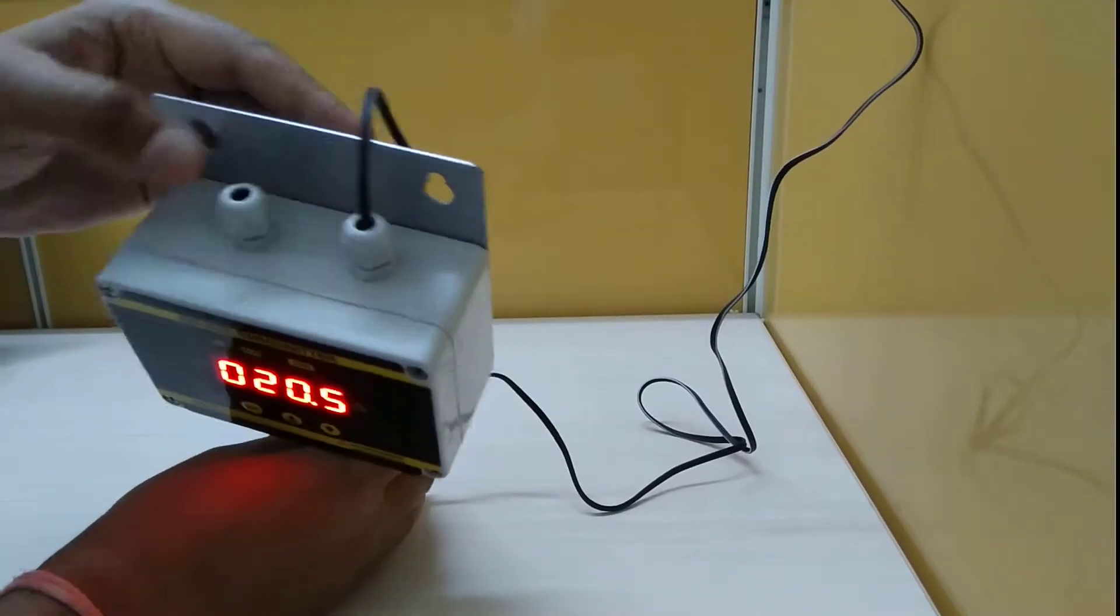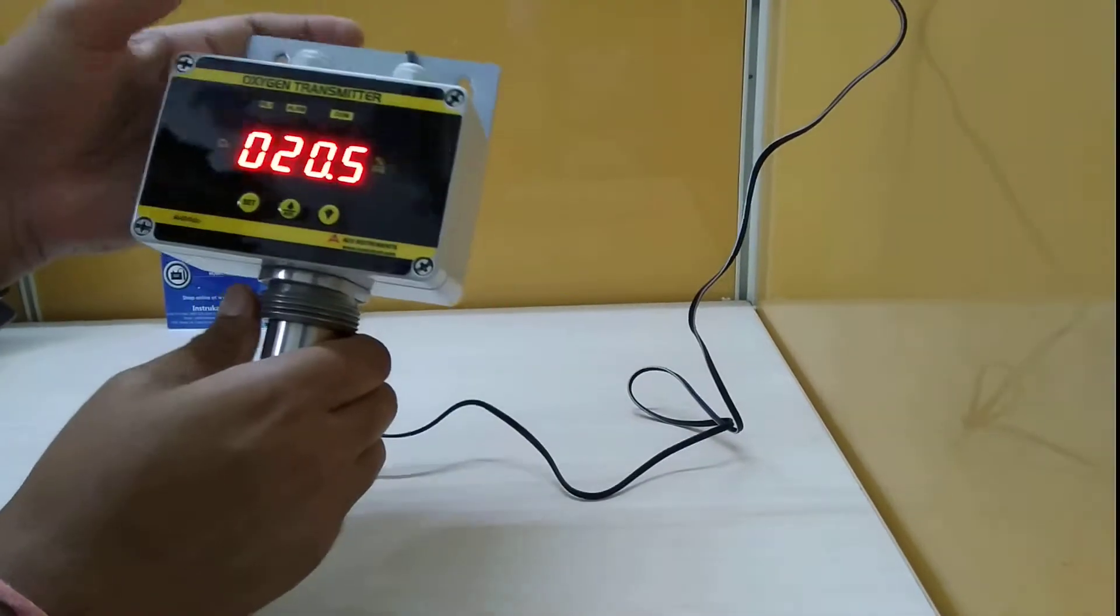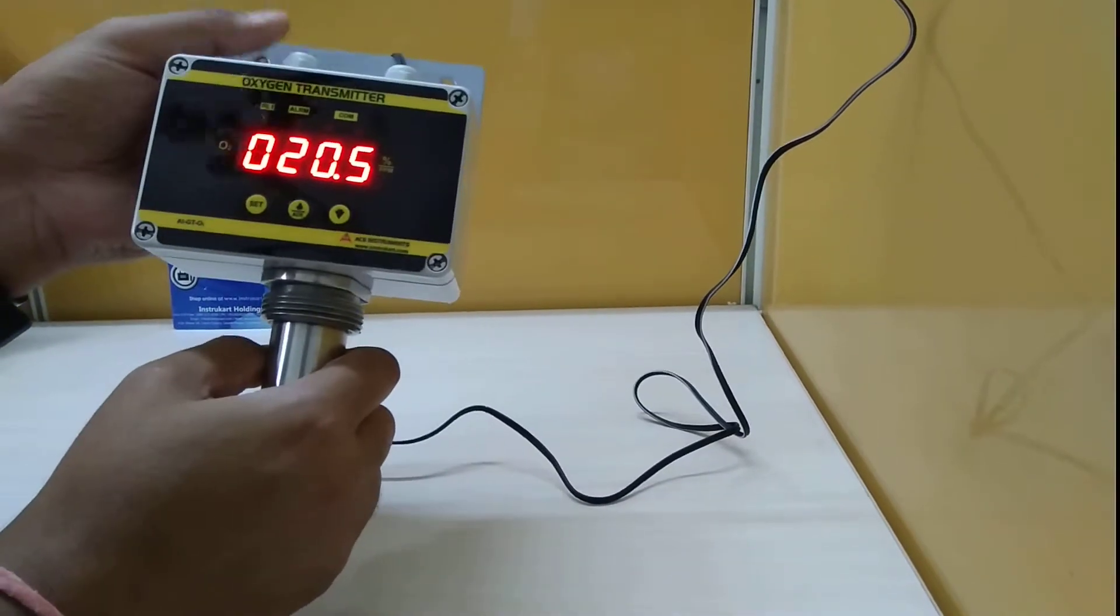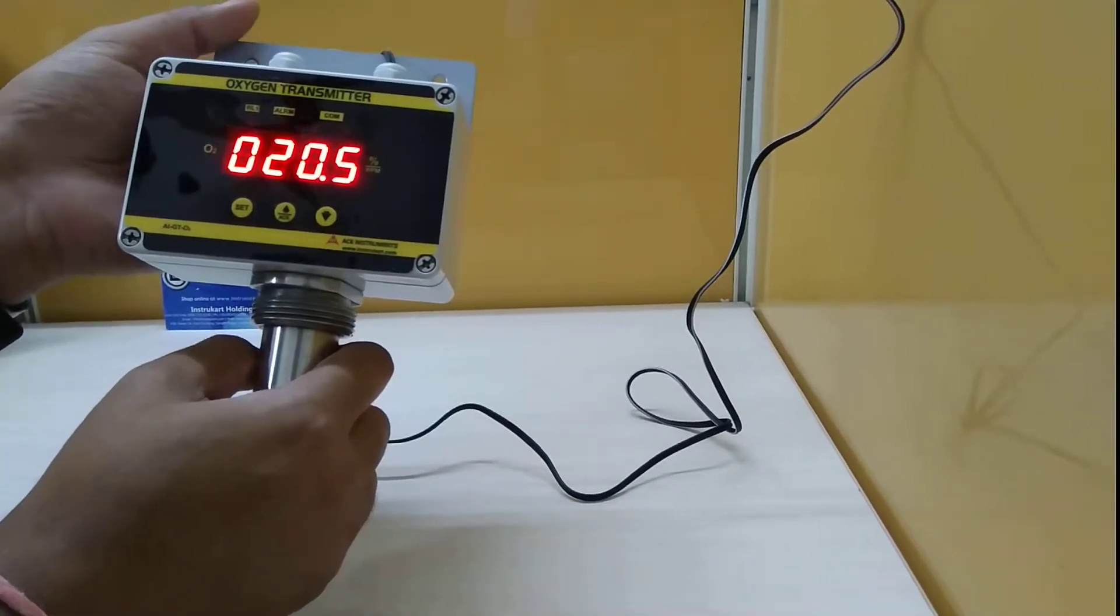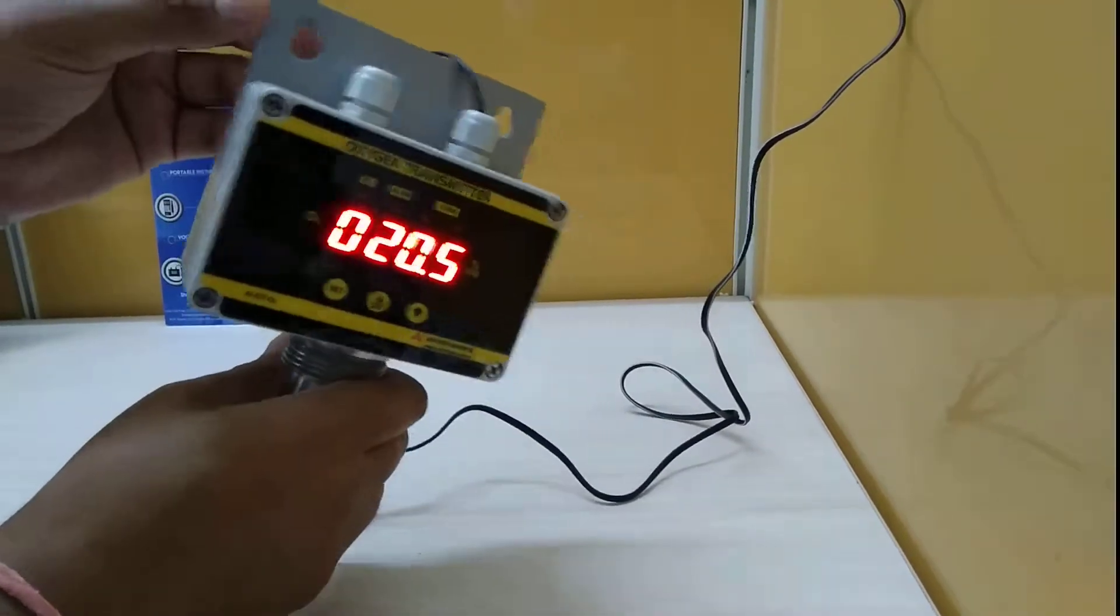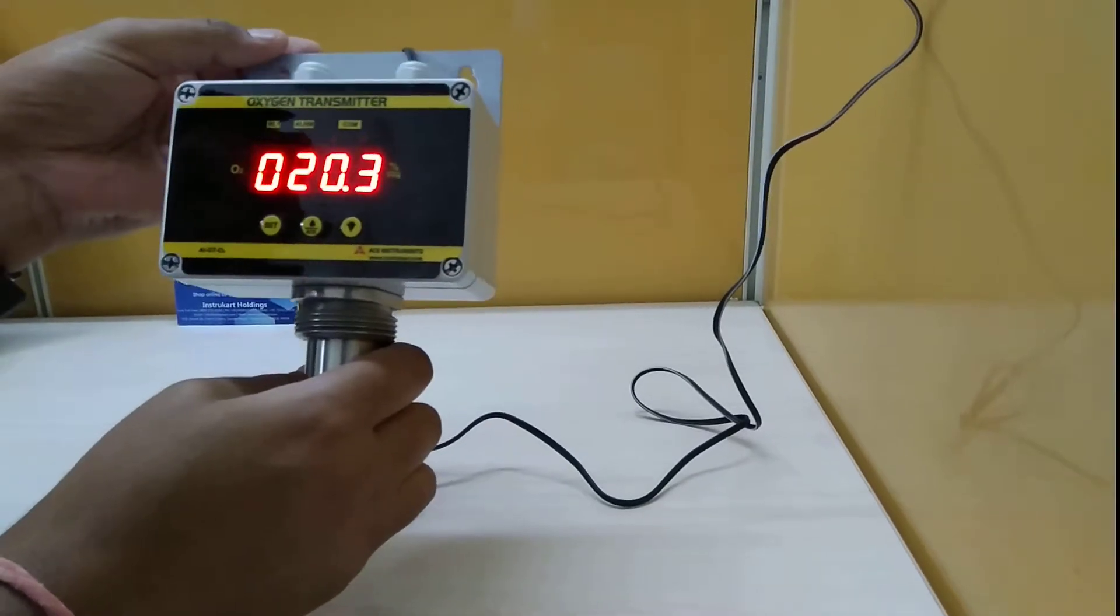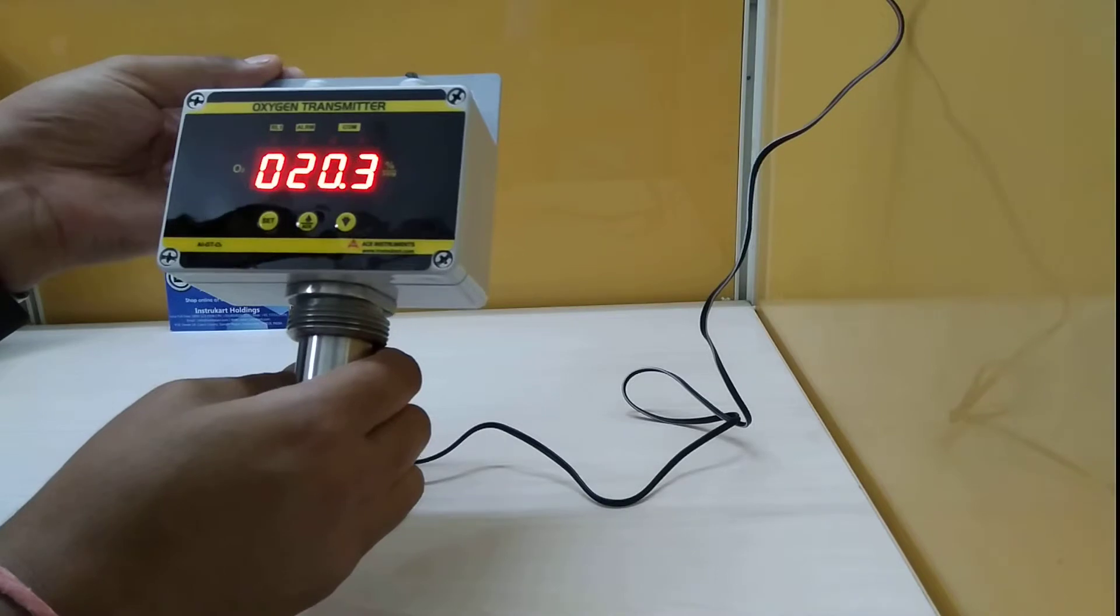This gland is used for communication connections. The instrument has communication options including 4 to 20 milliamp and RS-485 Modbus, which can interface with your PLC via SCADA. You can integrate this information into your BMS system.